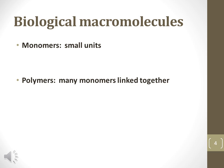Biological macromolecules are large molecules put together by a combination of smaller molecules. The smallest unit of a macromolecule is known as a monomer. The prefix mono means one. Polymers are long chains of different types of monomers. The prefix poly means many.